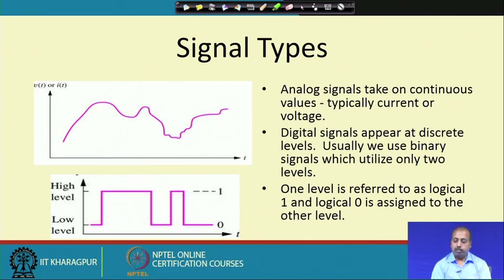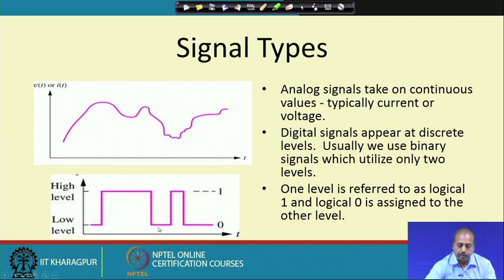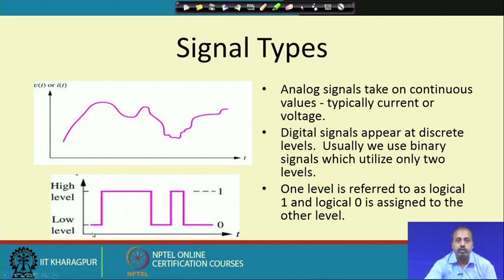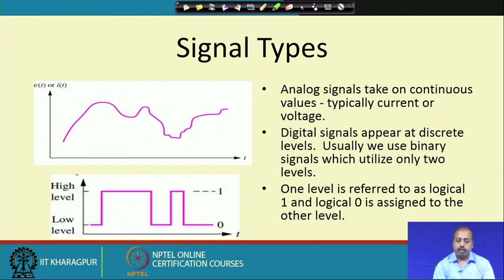Binary signals have a low level and a high level. For some range of time the signal is low, then it is 1, then 0, then 1 again. One level is referred to as logic 1 and the other as logic 0. It is not mandatory that high = 1 and low = 0 — somebody may say high is 0 and low is 1. What is required is that there are two distinct levels, one called logic 0 and one called logic 1. Digital signals are discrete in terms of level, not a continuous function.